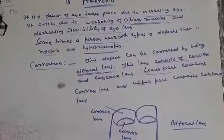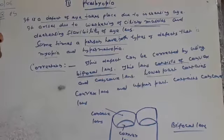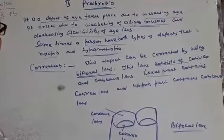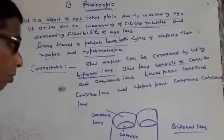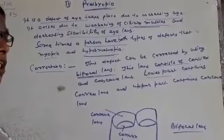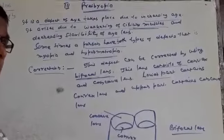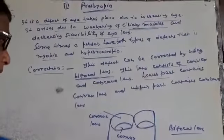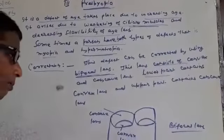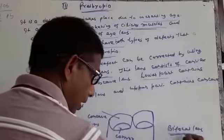This is presbyopia. In short, we can say presbyopia is a defect of eye which happens in old age. And in old age, a person is not able to see nearby objects as well as distant objects. Such defect can be corrected by using bifocal lens.